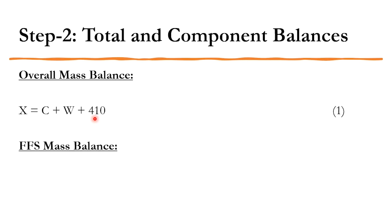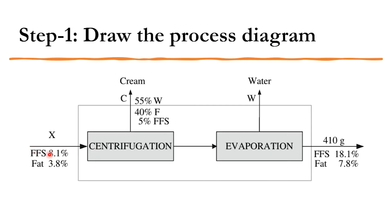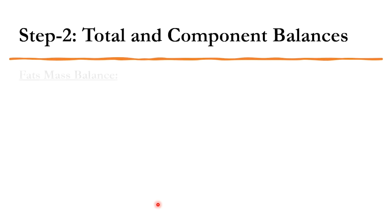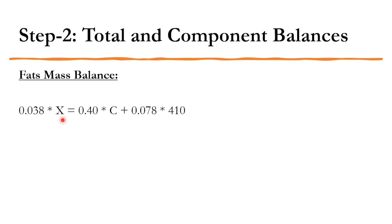The fat-free solids (FFS) balance: 0.081·x = 0.05·c + 0.181·410, which gives 0.081·x = 0.05·c + 74.21. The fat mass balance: 0.038·x = 0.4·c + 0.078·410, which gives 0.038·x = 0.4·c + 31.98. These are equations 2 and 3 respectively, and combined with equation 1 (overall balance), we have three equations.